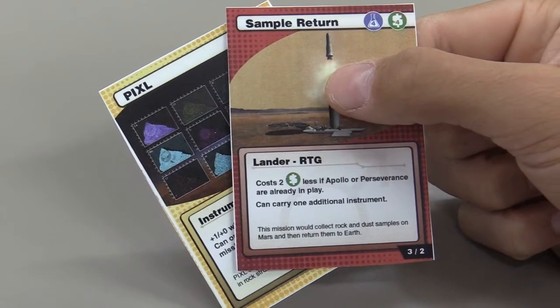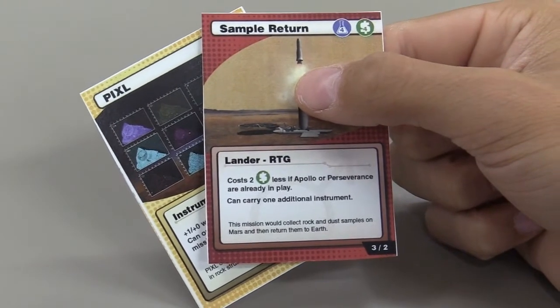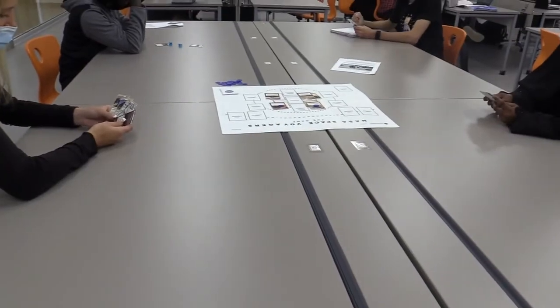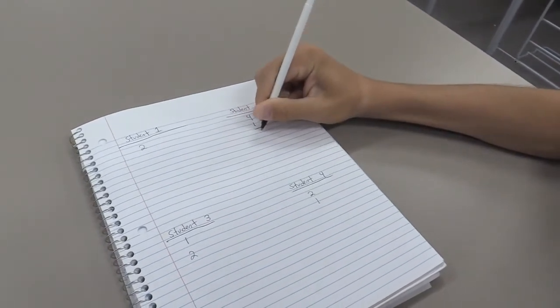Add an instrument to a spacecraft. Instruments can only be added to spacecraft according to the rules on the spacecraft card. Once instruments are added to the spacecraft, their research value can go toward the destination total.